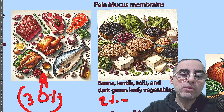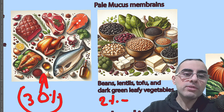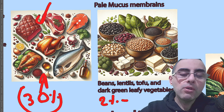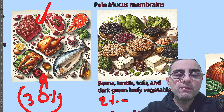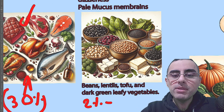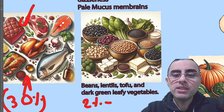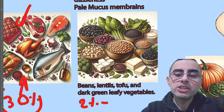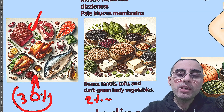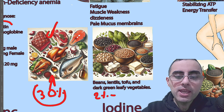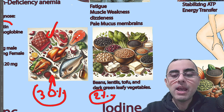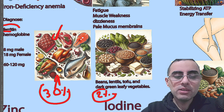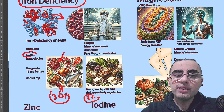Heme iron, or good iron sources, are meat, poultry, fish, and sea products. Non-heme iron sources are beans, soybeans, nuts, spinach, and chia. So you can intake iron from them, but absorption is very low — that's the idea.